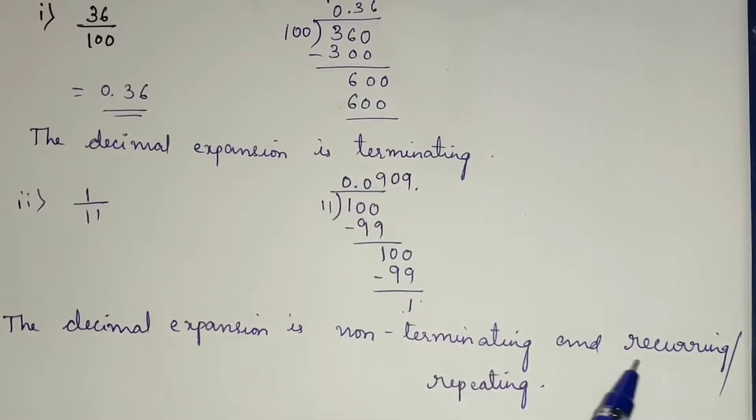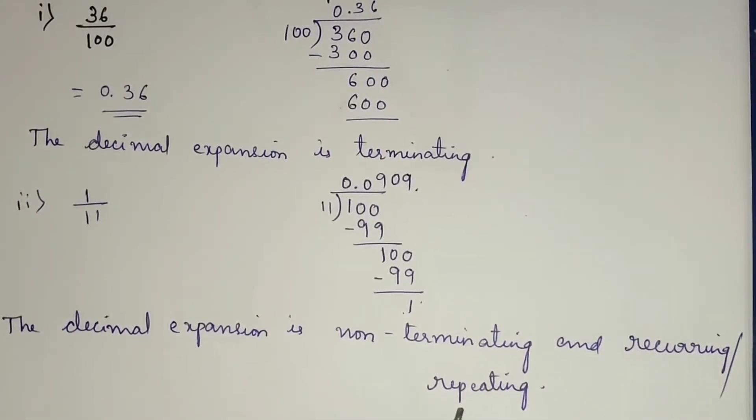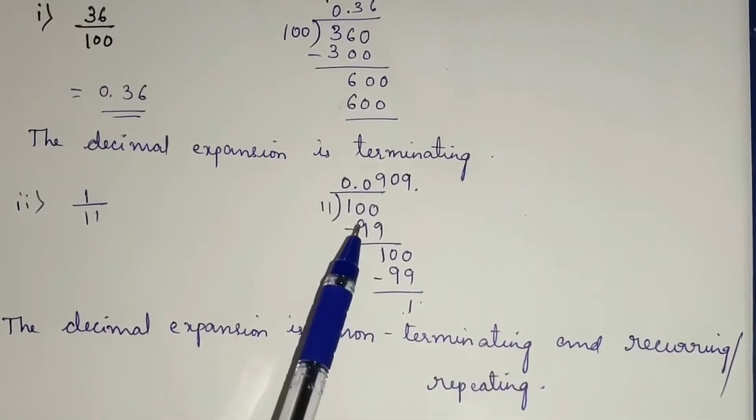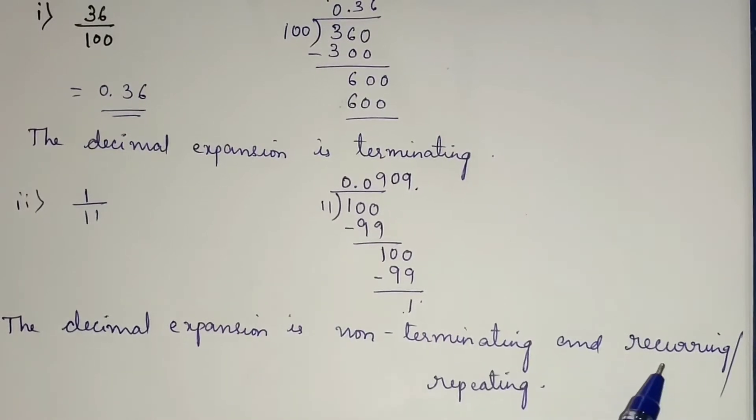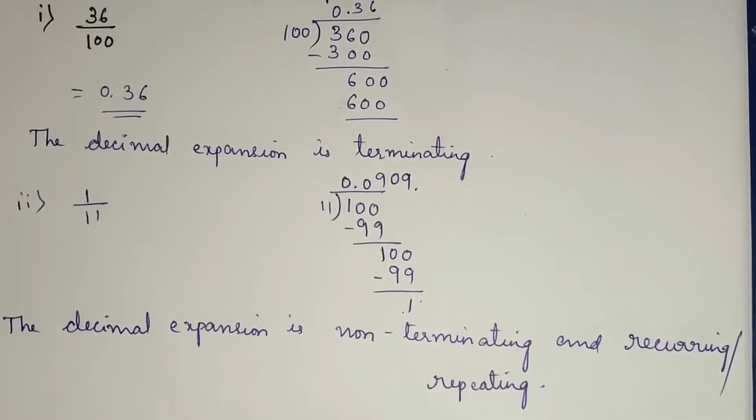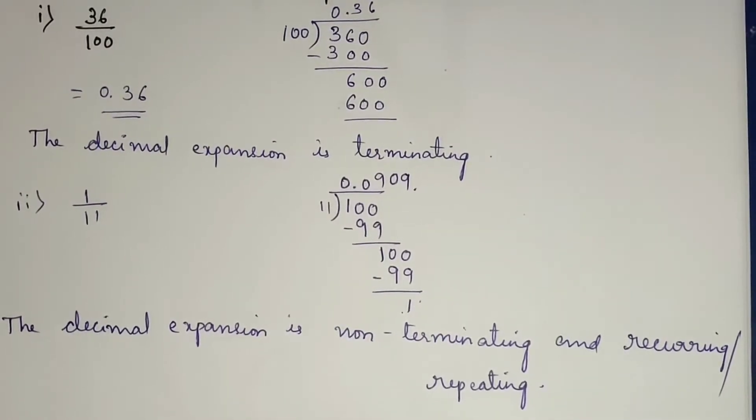You can also observe repeating numbers in the quotient — that is, recurring or repeating numbers.